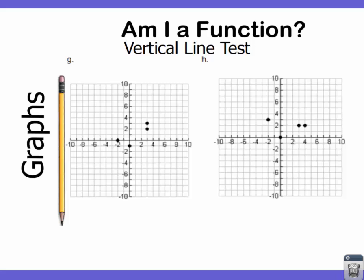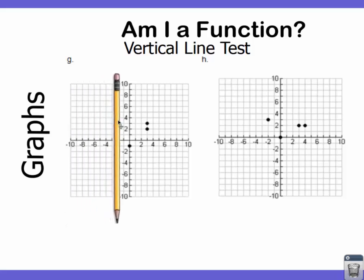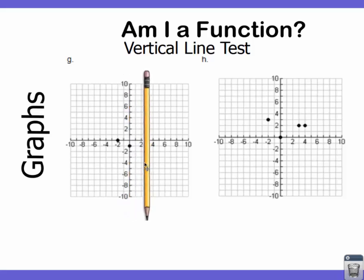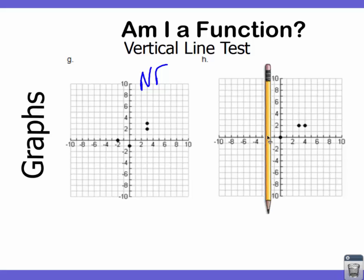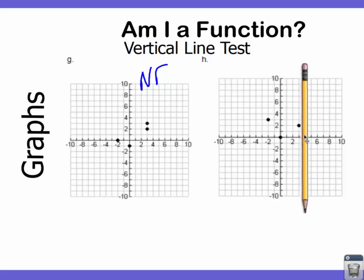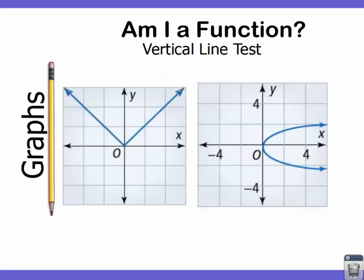Now, what about the vertical line test? If you remember from the video, from each point you should be able to draw one and only one vertical line through it. Using a pencil to represent the vertical line: if it hits two points at the same x value, the graph is not a function. In the second graph, the vertical line only hits one point at every x value, so that one is a function.